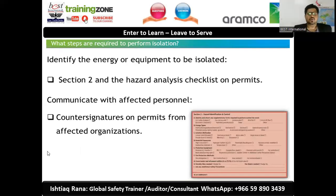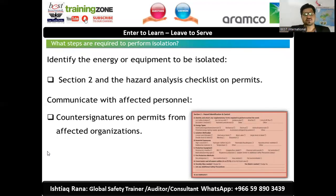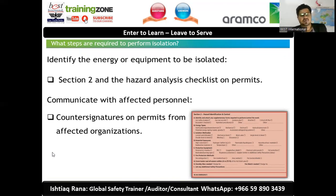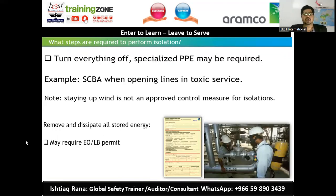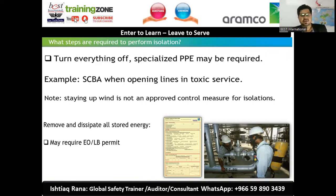The steps to perform isolation: first, identify the energy or equipment to be isolated — in our case, hydrocarbon pipelines. In section two of the hazard analysis checklist and your ULB permit or line break permit, you need to complete the hazard analysis checklist with controls and counter-signatures from affected organizations. For isolation: turn off everything, specialized PPE may be required — including full RPE (respirator protection equipment) especially if opening a line in toxic service — and remove and dissipate all stored energy. A ULB permit is required in most cases.